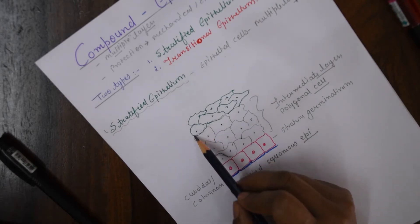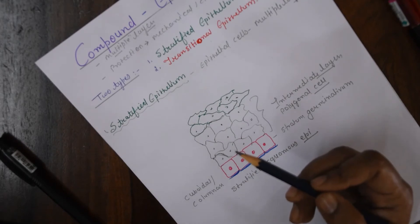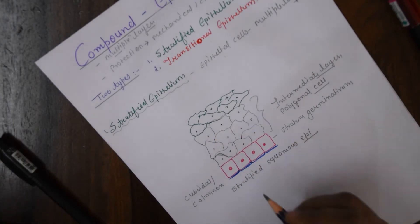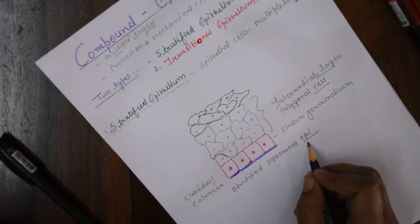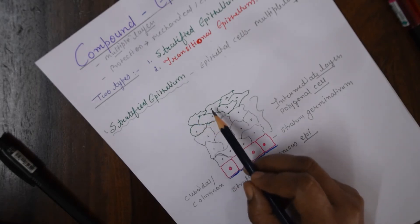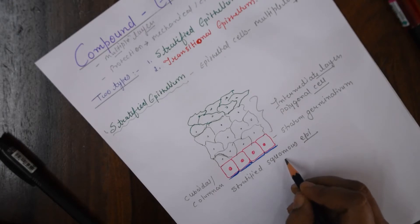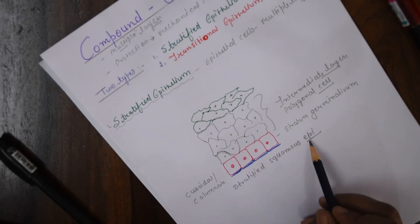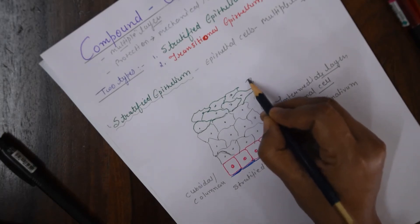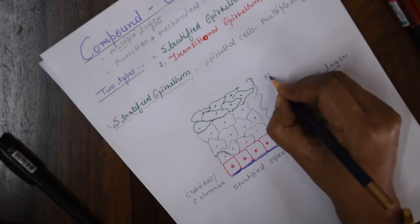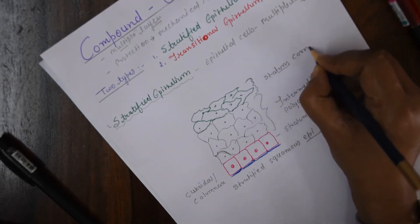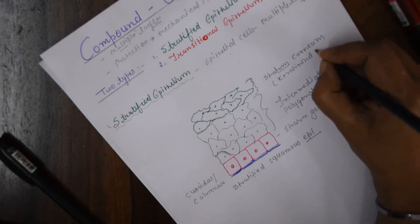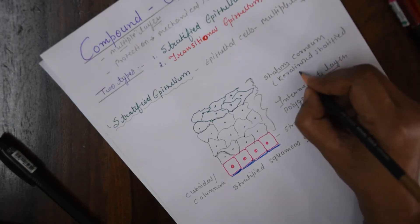In the superficial layer, there could be cuboidal cells, columnar cells, etc. If the superficial layer has cuboidal epithelial cells, that tissue is called stratified cuboidal epithelium. If it has columnar epithelial cells, it is called stratified columnar epithelium. The outermost layer is called stratum corneum in the case of keratinized stratified squamous epithelium.